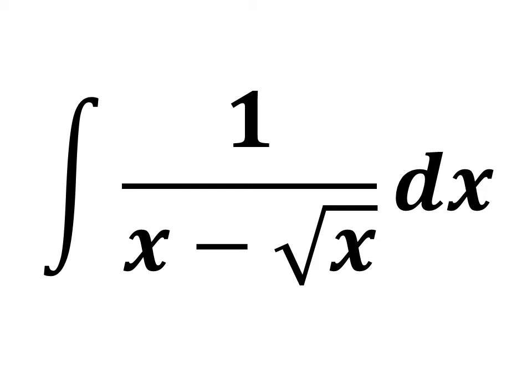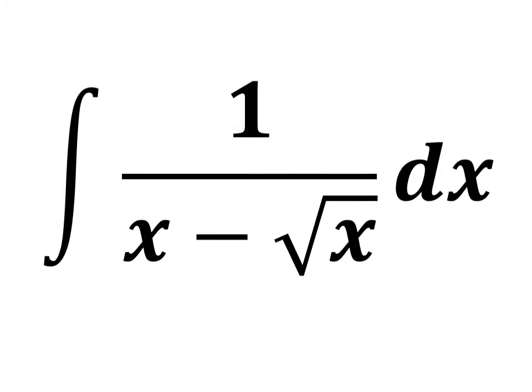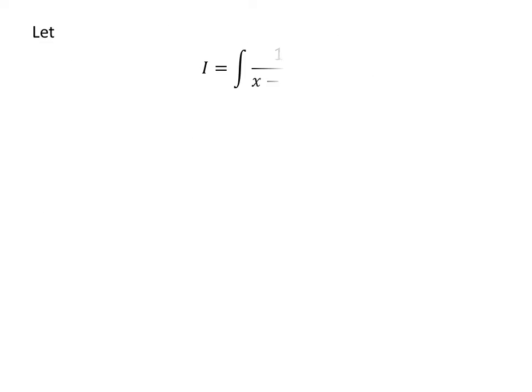In this video, we will learn to find the value of the integral of 1 upon x minus square root of x. Let i be equal to the integral of 1 upon x minus square root of x with respect to x. Taking out the common factor square root of x, we get i is equal to the integral of 1 upon square root of x times square root of x minus 1, with respect to x.